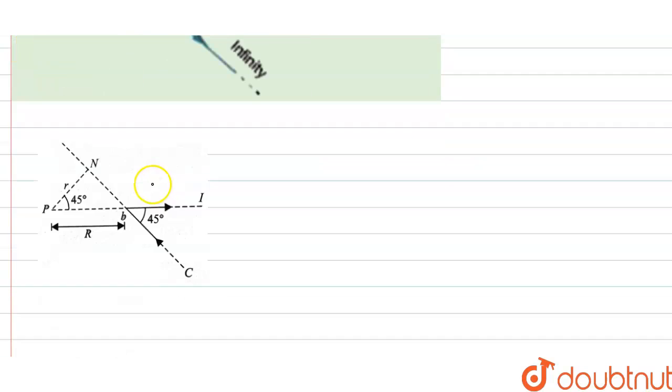So this is the new diagram. Now this angle is 45 degree, that's why this opposite angle will also be 45 degree, and it is here 90 degree, so it will be 45 degree here.